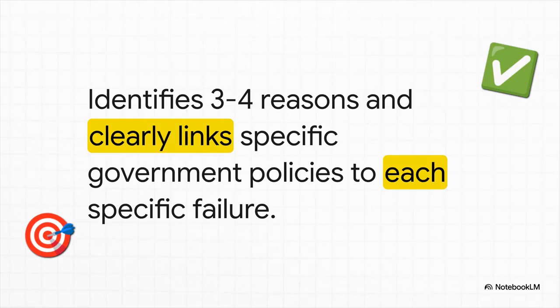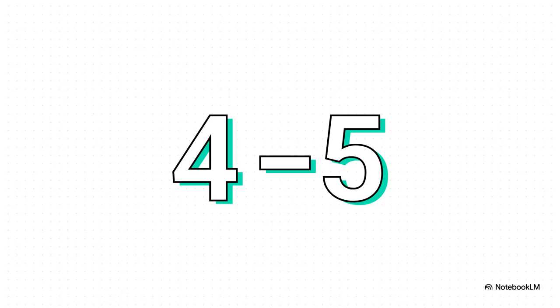Here's what an excellent answer looks like: it identifies at least three, maybe all four, of the core failures we discussed. But more importantly, it nails that connection — it clearly and specifically links each failure to a corresponding government policy. That shows a deep level of understanding. Now, what about an average score — something in the four to five point range? What are the common mistakes that land people there?